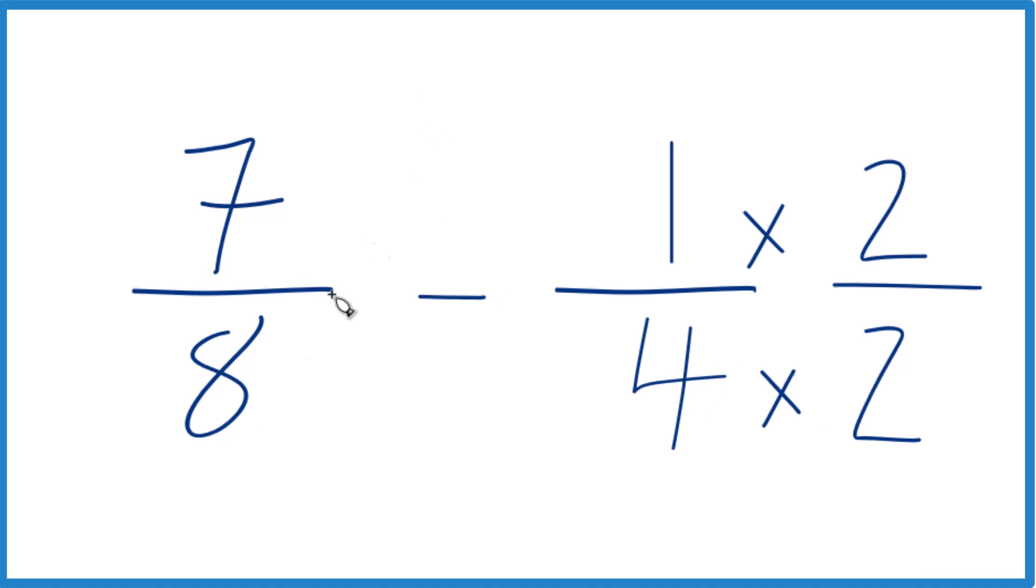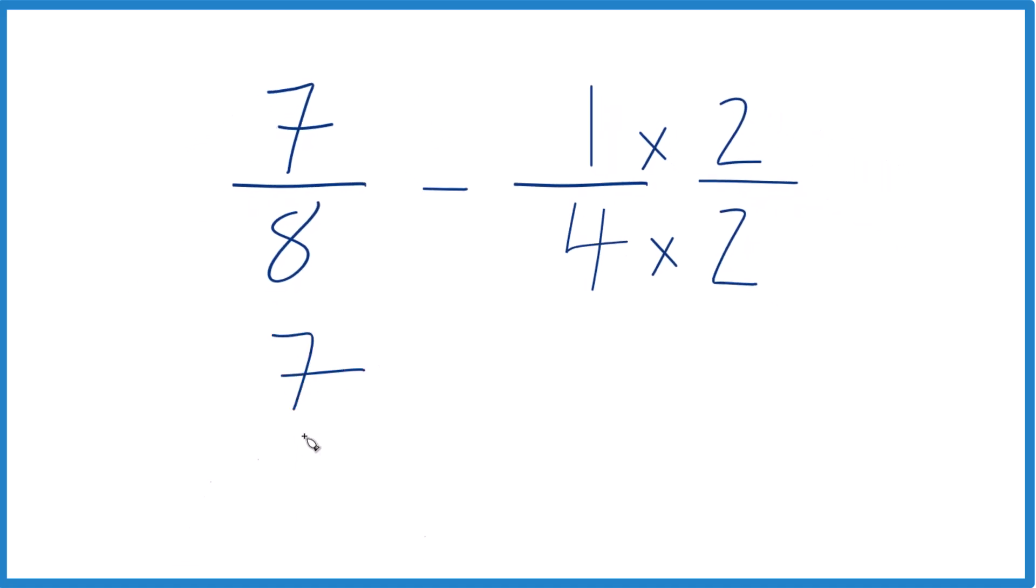I didn't change the value, but now we have our 7 eighths here. We subtract 1 times 2 is 2. 4 times 2 is 8. And 2 eighths, that's the same as 1 fourth. They're equivalent fractions.